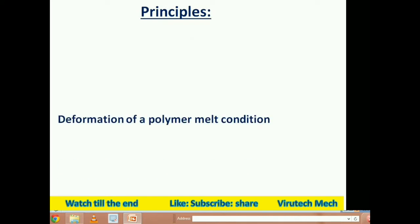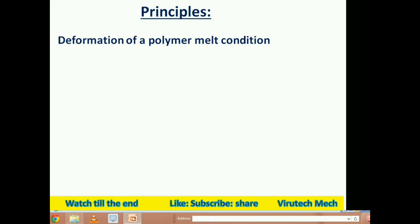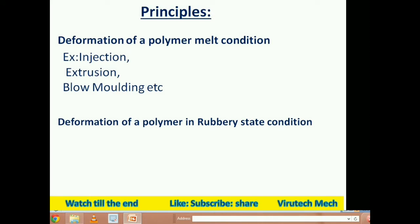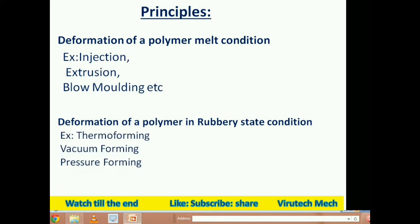Let's start to understand the basic principle of plastic technology. We have to understand the deformation of polymer in melt condition. Plastic is basically processed in two methods. The first method is where we apply heat and the plastic raw material, called polymer, is in melted condition — processes like injection molding, extrusion, and blow molding fall here. The second is the deformation of polymer in the rubbery state condition, where major processes include thermoforming, vacuum forming, and pressure forming.